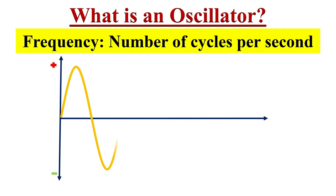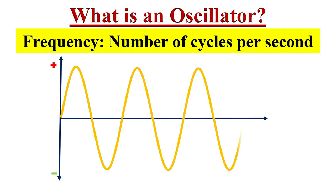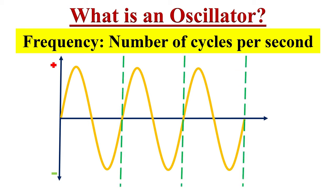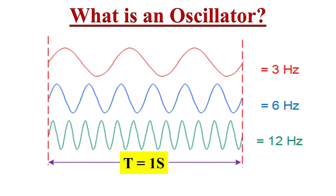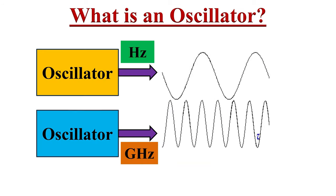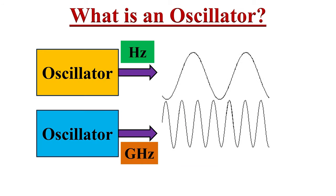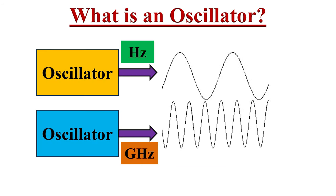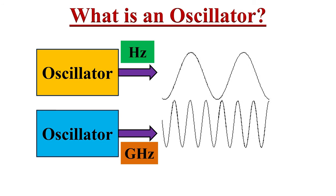Frequency is nothing but the number of cycles per second. For example, three cycles per second is three hertz frequency. If the number of cycles in a second are six, then it is six hertz frequency. If twelve cycles per second, then it is twelve hertz frequency. Oscillators are capable of producing frequencies from a few hertz to several gigahertz.